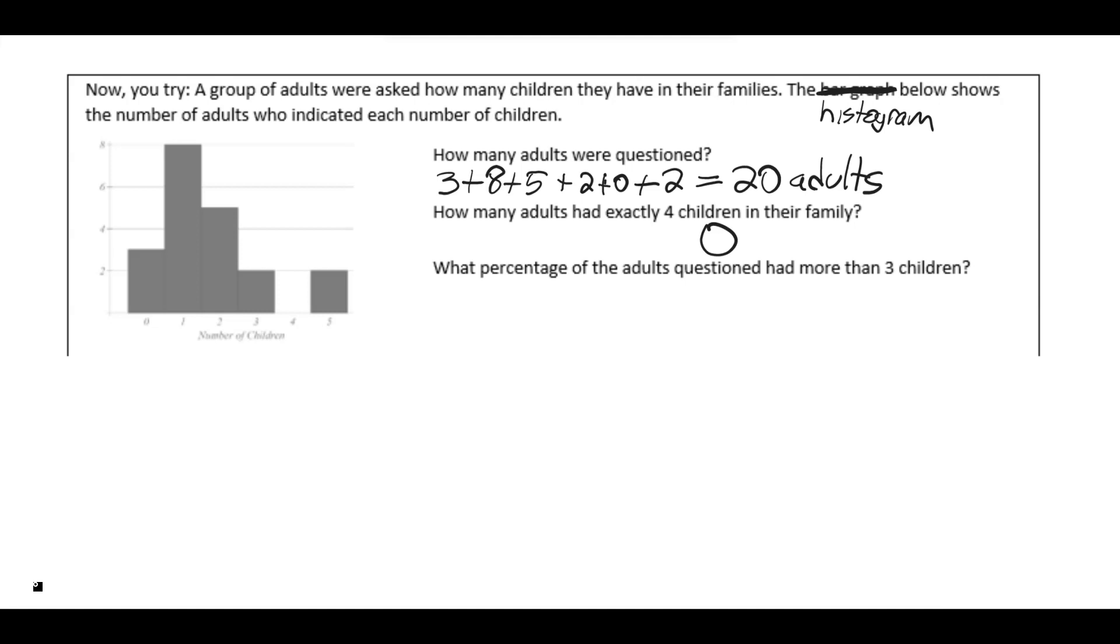What percentage of the adults questioned had more than three children? Now, this is a combo question. First off, what percent? We're going to need to figure out the partial total over the total, and then times by 100 to get percent. So that's our basic formula to work out that percent of adults. First off, how many had more than three children?